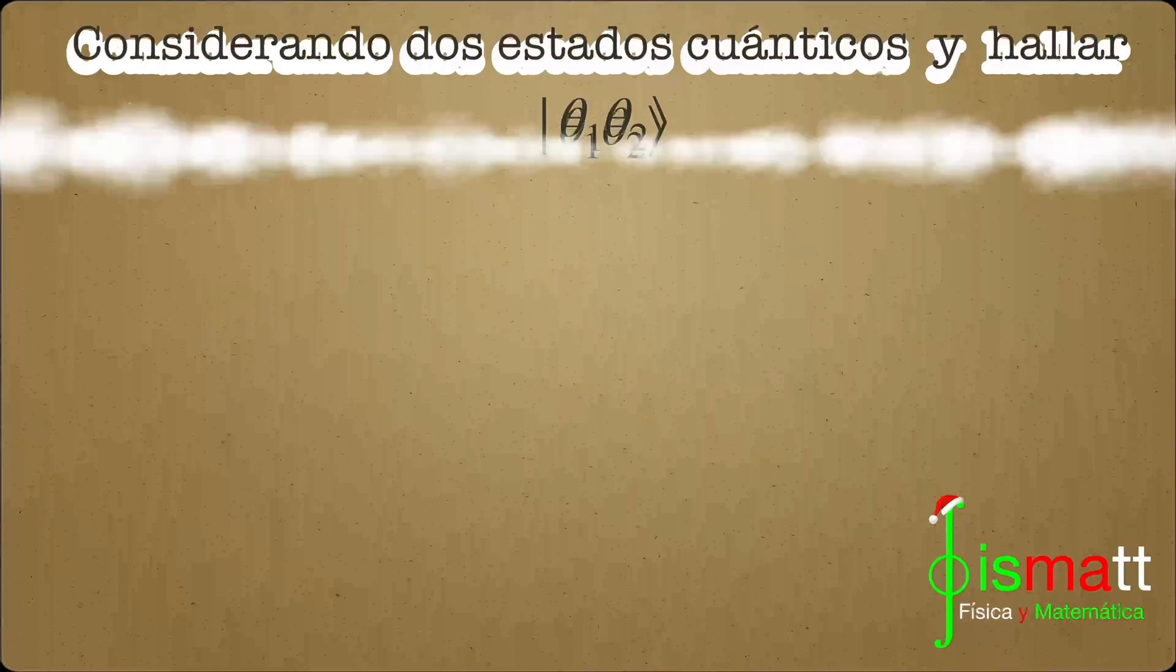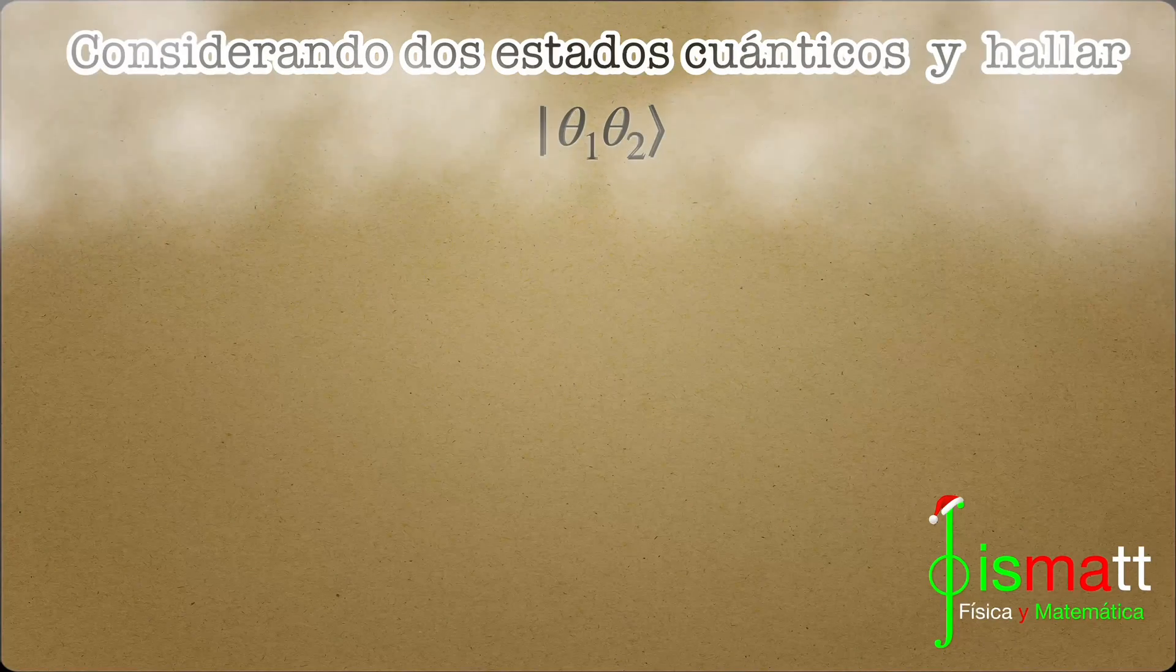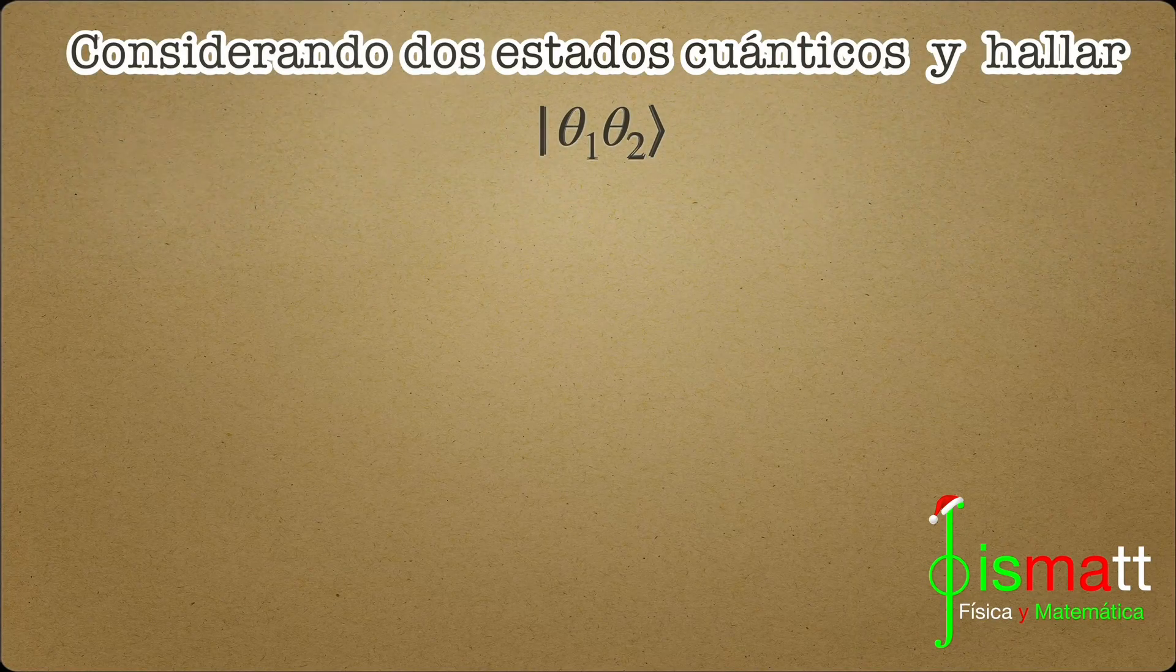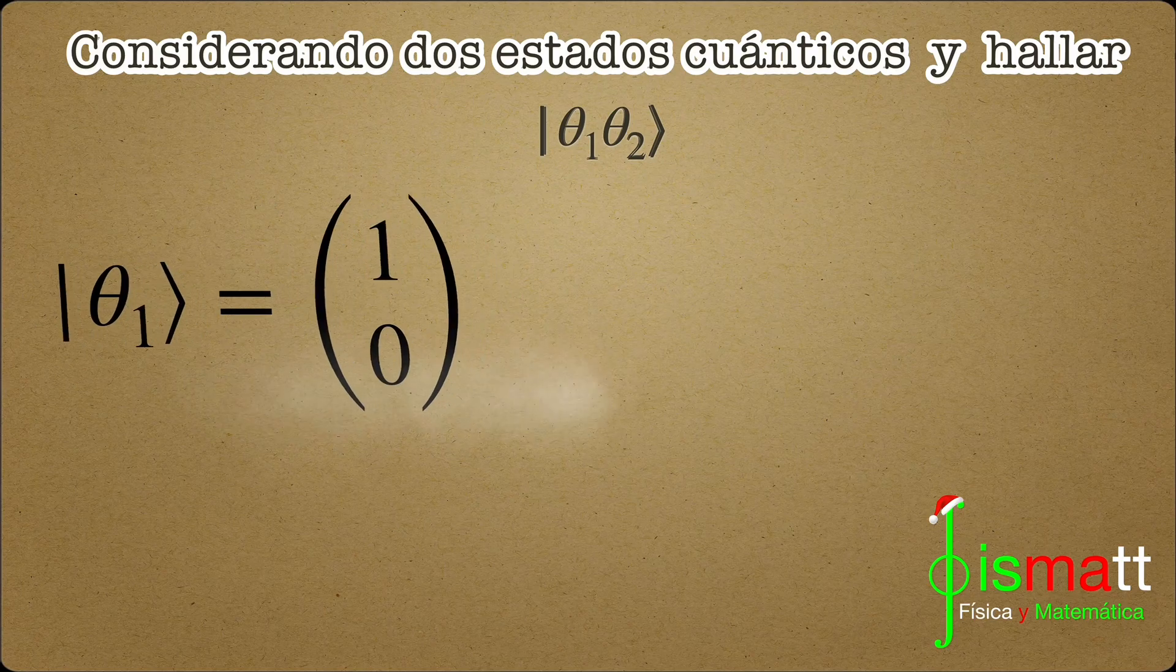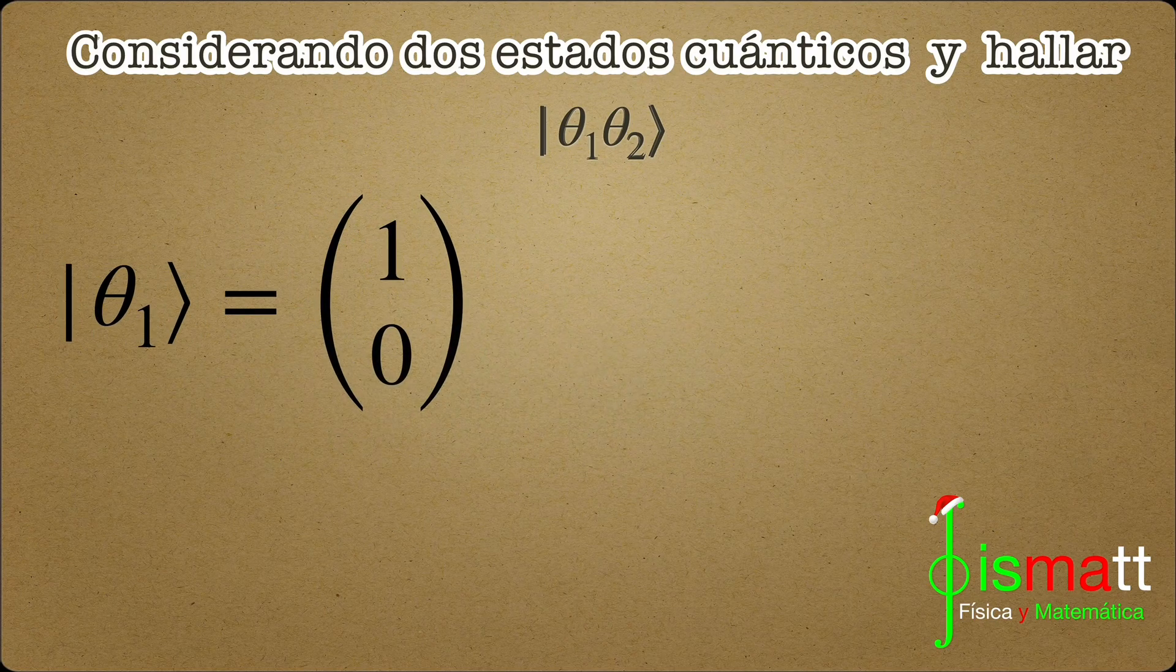Basically, we're going to work with two matrices, which is like an array of numbers, but cooler, one called ket of theta 1 and another called ket of theta 2.